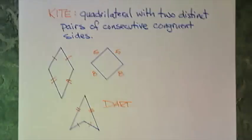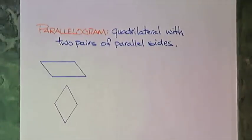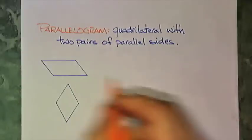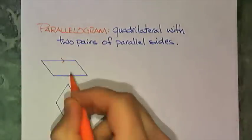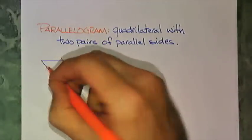Moving on. The next quadrilateral is a parallelogram. And that is a quadrilateral with two pairs of parallel sides. All right, let's mark them as such. Parallel. And then parallel.